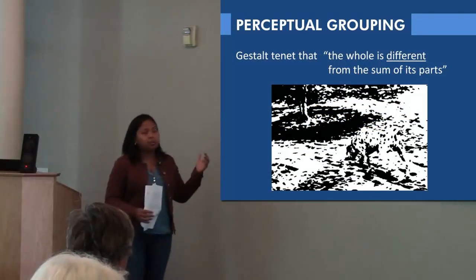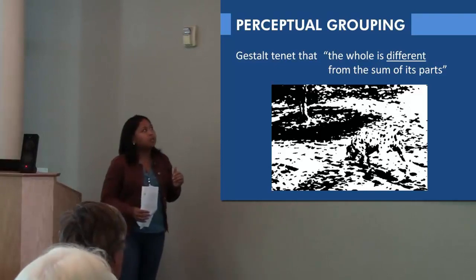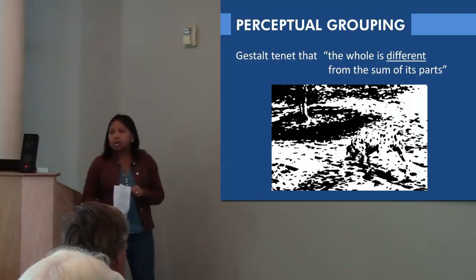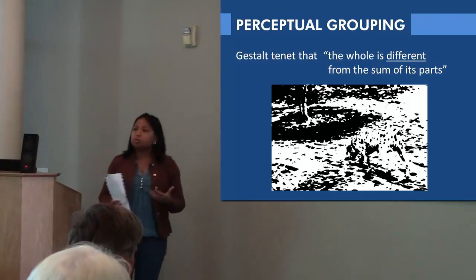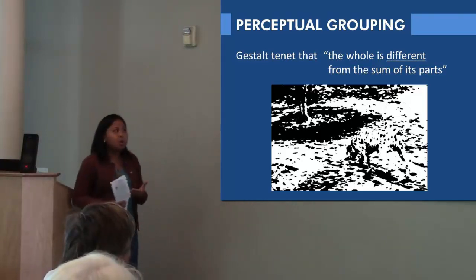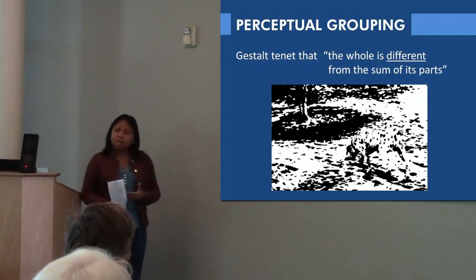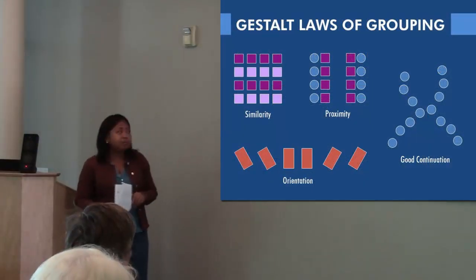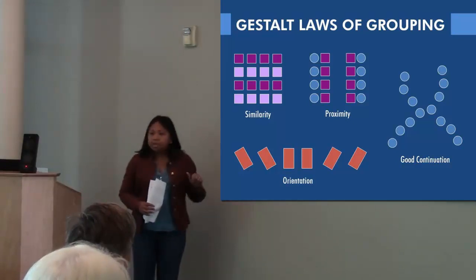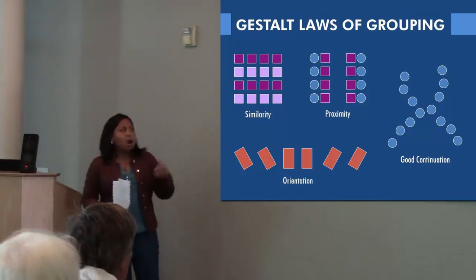One idea about how we do this was proposed by the Gestalt psychologists: the whole is different than the sum of its parts. The whole — the dog in this image — bears no resemblance to the ink splotches that created it. This reinforces the idea that perception requires perceptual organization or grouping. The Gestalt psychologists put forth principles about how we group: we group similar things together, and we group things that are close together.